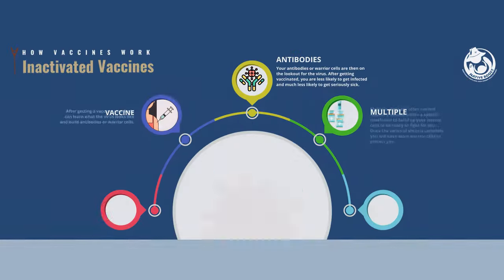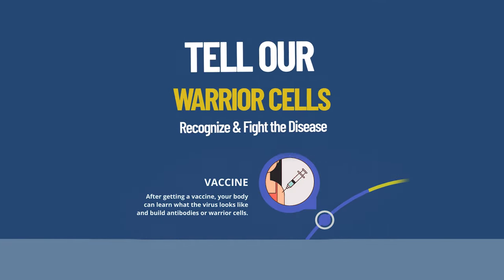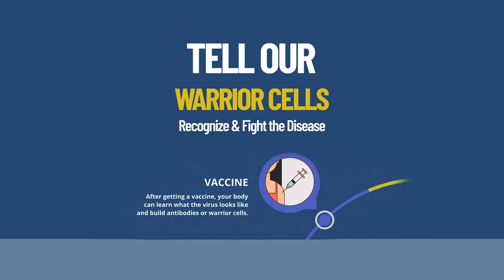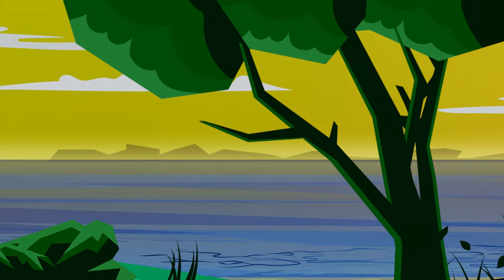We all have antibodies or immune warrior cells that stand guard and attack diseases. When we get a vaccine, the ingredients in the shot tell our warrior cells how to recognize and fight the disease. Imagine I am the immune system — on a bright sunny day, before getting a vaccine I'm not able to see the virus, but after getting a vaccine I'm able to see the virus.